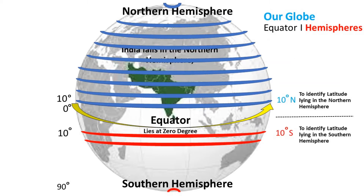To identify which latitude we're talking about, we look at which hemisphere it's in. For example, to identify a latitude in the northern hemisphere, we say 10 degrees north. To identify a latitude in the southern hemisphere, we say 10 degrees south.